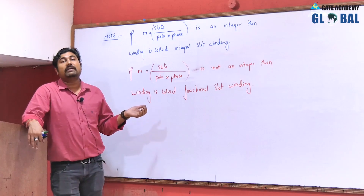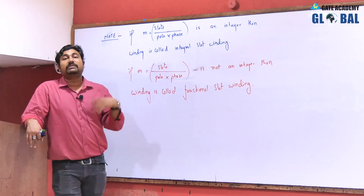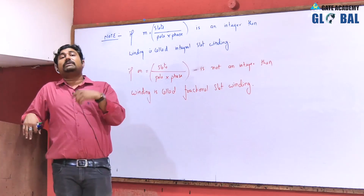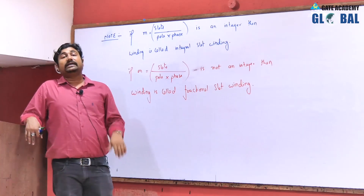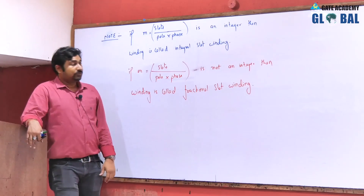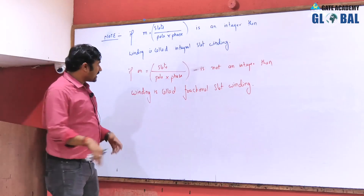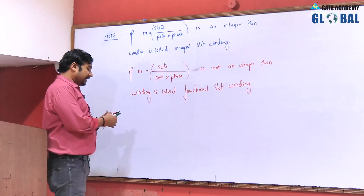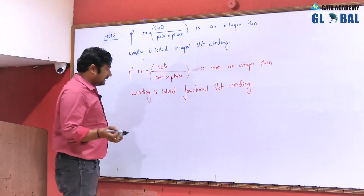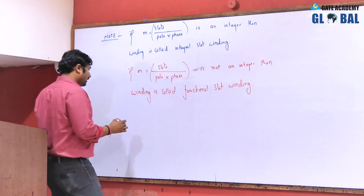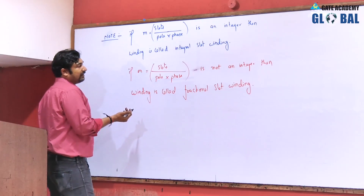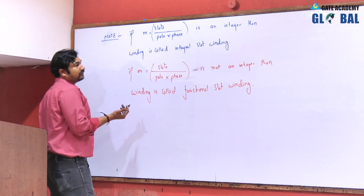For example, if m is equal to 3/2, then it denotes that the winding is fractional slot winding. In case of fractional slot winding, we use KD in a different format. We only need to remember the formula.